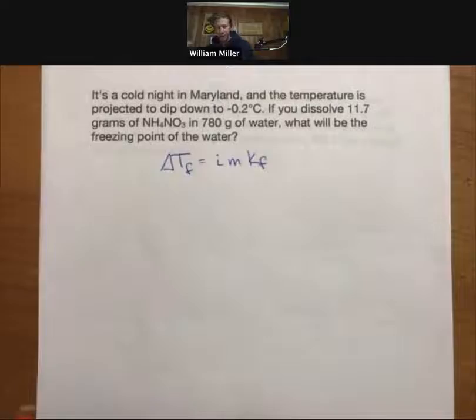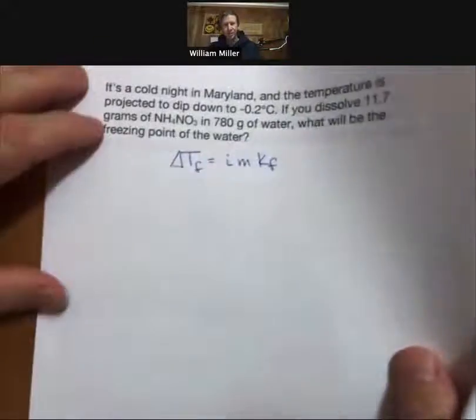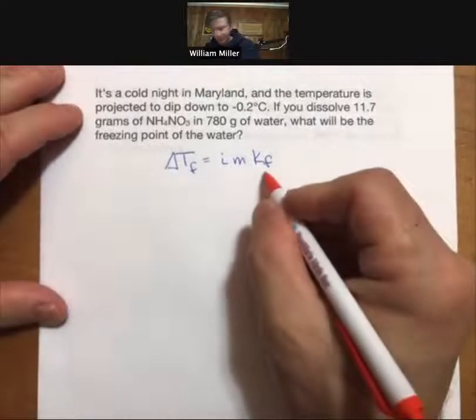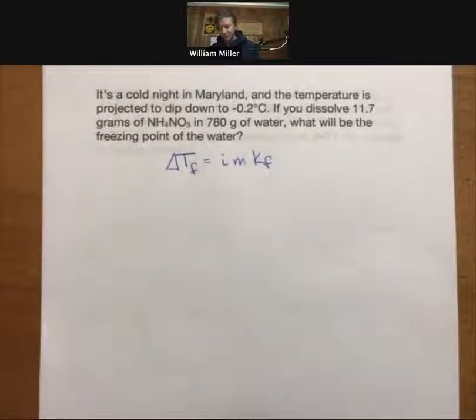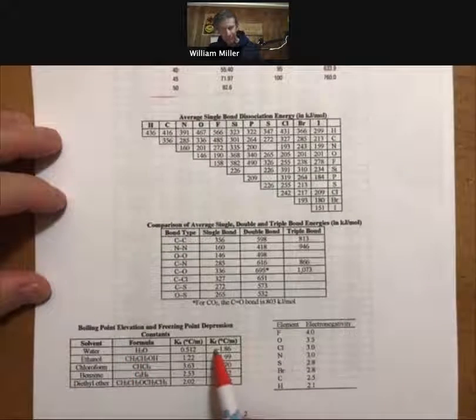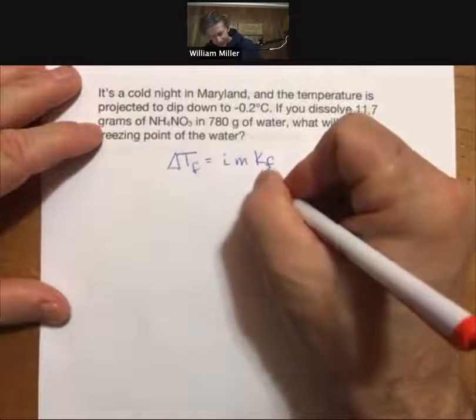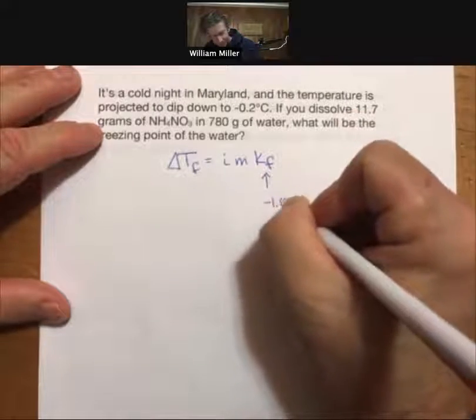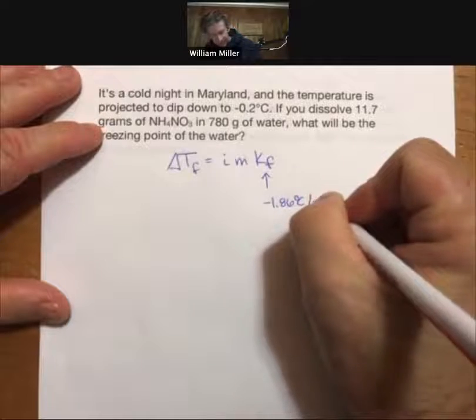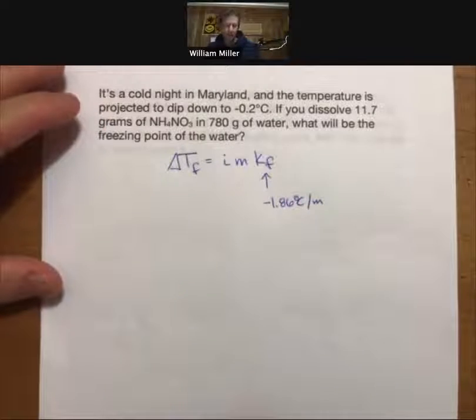We have our formula for freezing point depression in terms of molality and Kf. This is going to deal with water as our solvent, so we go to our conversion and equation sheets. We see that water's Kf is minus 1.86, and that's degrees Celsius per molality.